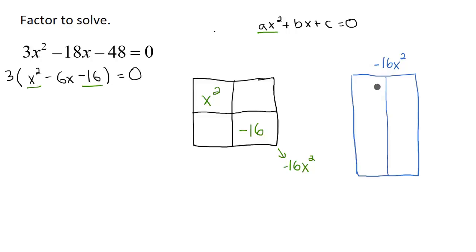So my factors of -16x² will be 1x times 16x, then I'll have 2x times 8x, and then 4x times 4x.